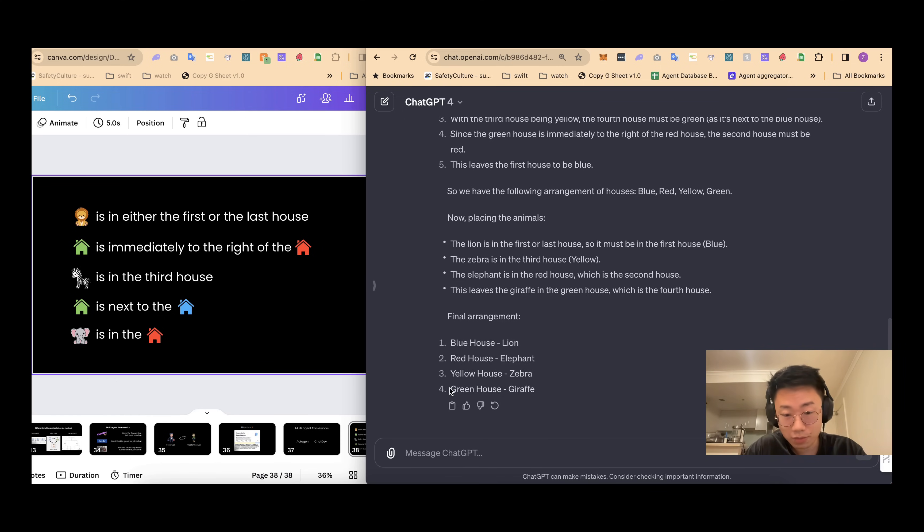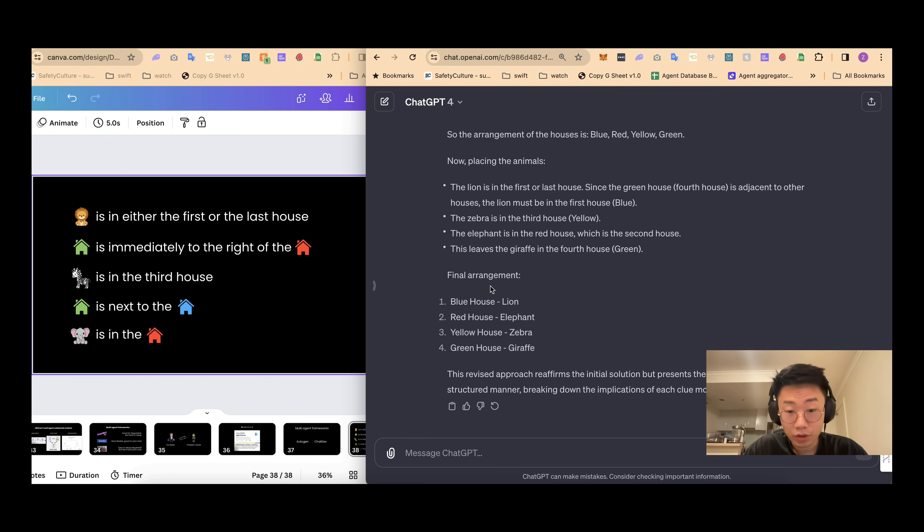And green house should be immediately to the right of the red house. Okay. So the second clue didn't seem to be correct. The green house is located in the end, which is not immediately to the right of the red house. And also I want to give it a try to see whether I can ask GPT-4 to just reflect and figure out whether it can resolve the issue itself. So I will tell it, reflect on the answer and see if you can do it better.